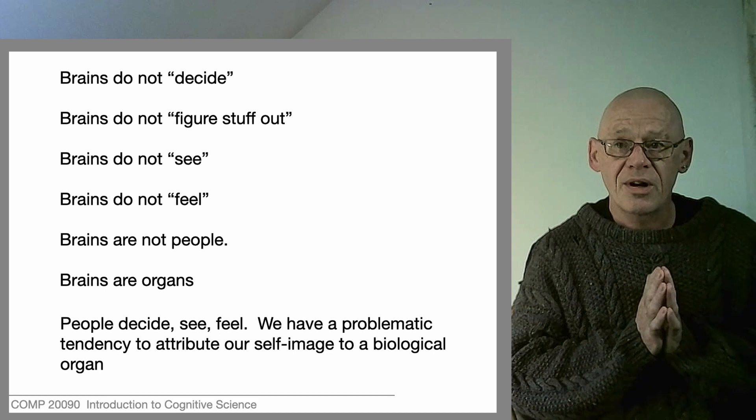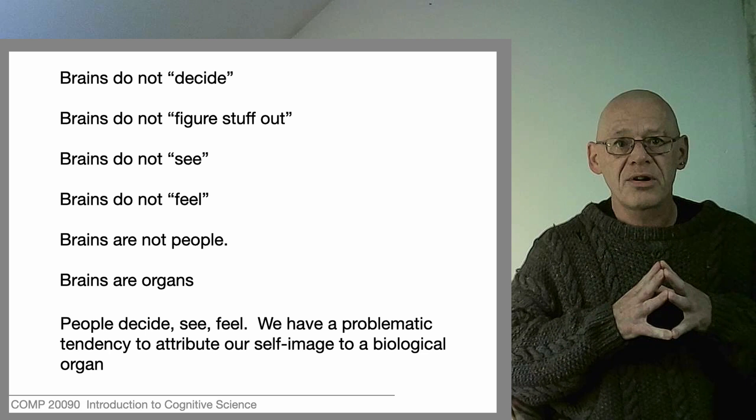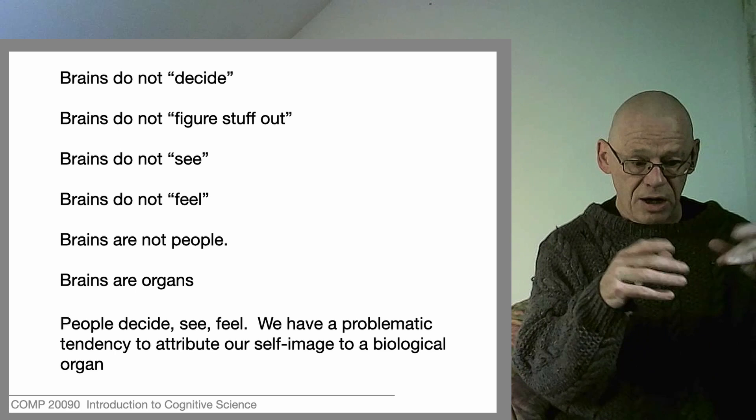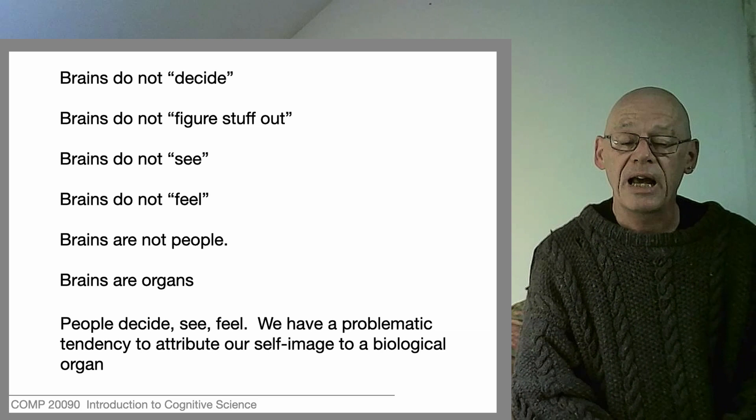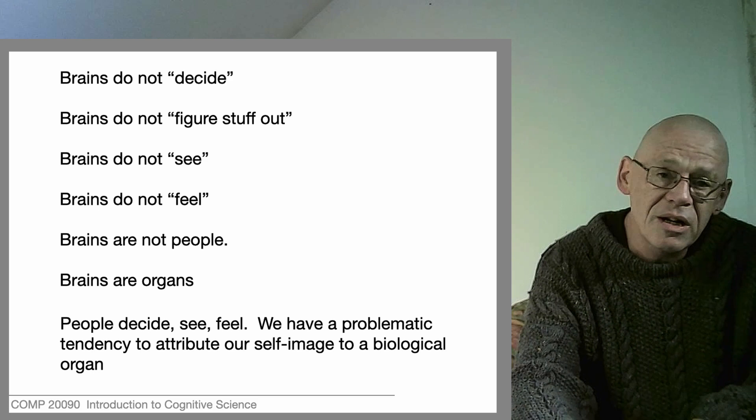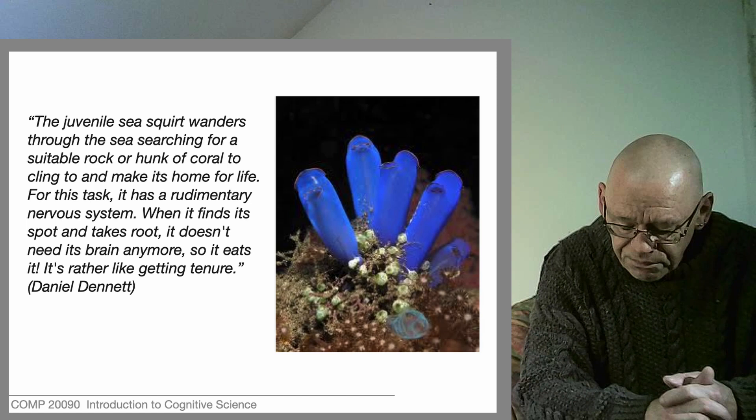When nervous systems enter the evolutionary record they do so as distributed nerve nets and animals that are a lot like our contemporary jellyfish. These nerve nets cause the body to pulse, they introduce animate locomotion, so the nervous system is closely associated with getting around movement locomotion from the very start.